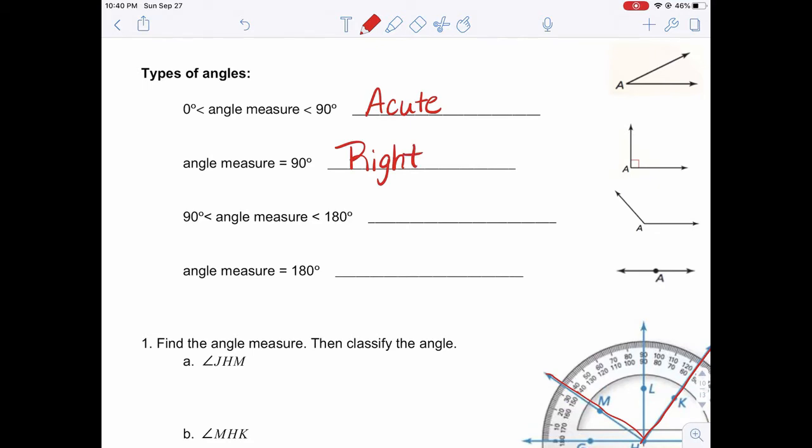If we have an angle with a measure greater than 90 but less than 180, we call that angle obtuse. And finally, angles that measure exactly 180 degrees—they look like a straight line—we call straight angles. Straight lines have a measure of 180 degrees; we call those straight angles.